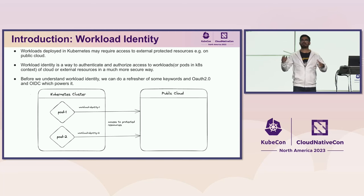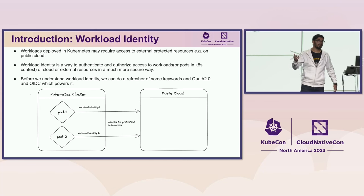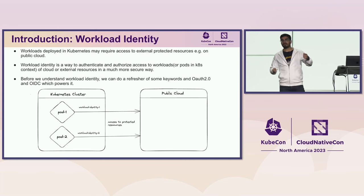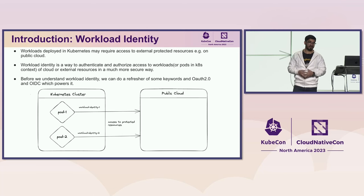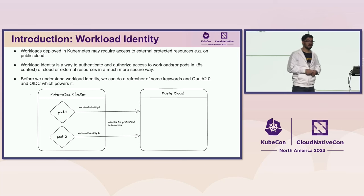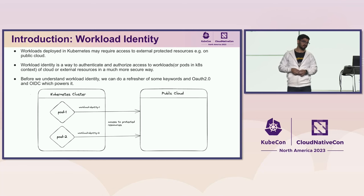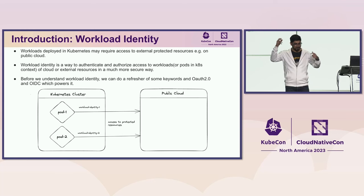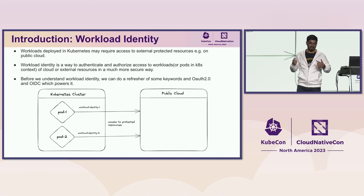Workloads deployed in Kubernetes may require access to external resources on public cloud, or a workload in Kubernetes would like to talk to another workload in Kubernetes, and they need to identify each other. So workload identity is a way to authenticate workloads. You can have two pods — pod one and pod two — considered as a workload, and there is some identity associated with these two pods which will be used to authenticate.